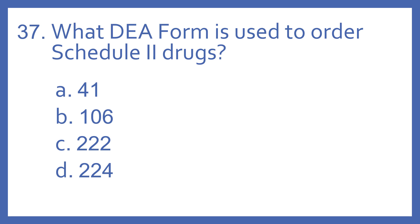Number 37. What DEA form is used to order Schedule II drugs? A. 41, B. 106, C. 222, or D. 224?